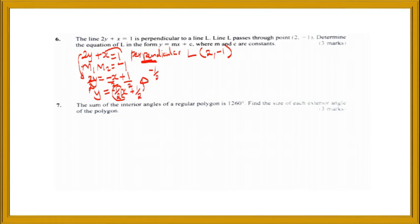To get the gradient of line L, we say negative one-half times m2 equals negative 1. Multiplying both sides by negative 2, that one cancels, so m2 equals negative 1 times negative 2, which gives positive 2.